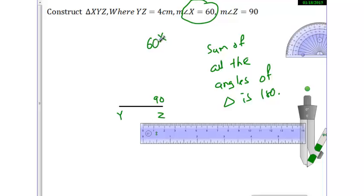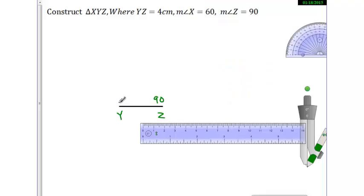So yeh 90 hai, right? Yahan pe mujhe point nahi pata hai but jahan pe bhi X hoga it will be 60. Abhi 90 plus 60 ho jayega 150. 150 me kitna add karenge to 180 hoga? 30. So yahan pe 30. So yahan pe 30 bana dunga, so 90 plus 30 is 120, and here automatically 60 will come. Because yahan pe 30 me add kiya to 120, 120 me kitna add karenge to 180 hoga? 60. So yahan pe automatic 60 arrange ho jayega.